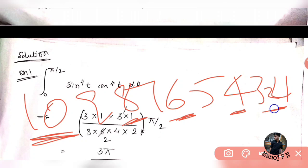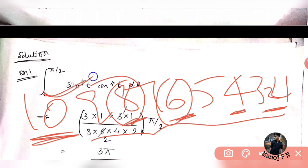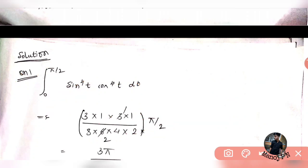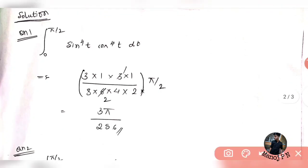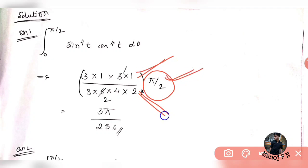So I am going to consider even upcomings of 10: 8, 6. Upcomings is a series of numbers before the particular number. So this question is integral 0 to pi by 2, sin power 4t cos power 4t dt. Numeratorily, I am going to write the odd upcomings; denominatorily, I am going to write the even upcomings, and I am going to multiply it with pi by 2. This is a big chance — do not forget, it is important.